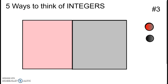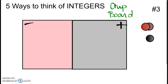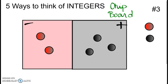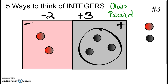The third way is called a chip board. In this model, we actually have things that we can count — you can count positives and count negatives. On a chip board, we always put the positives to the right and the negatives on the left. These little chips are things I can move around. One chip on the negative side represents one negative, and a chip on the positive side represents a positive. My whole board right now is showing two negatives and three positives. We'll do more examples with the chip board in the next section.